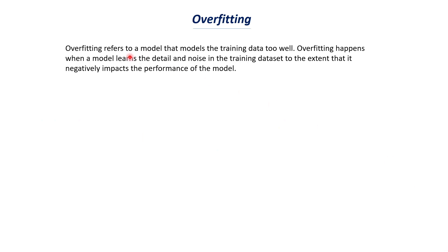So what is meant by overfitting? Overfitting refers to a model that models the training data too well. Overfitting happens when a model learns the details and noises in the training dataset to the extent that it negatively impacts the performance of the model. In other words, the model over-trains on the training data.